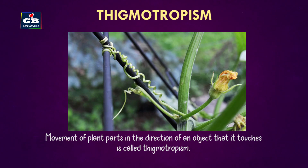Movement of plant parts in the direction of an object that it touches is called thigmotropism. For example, tendrils coiling around a support.